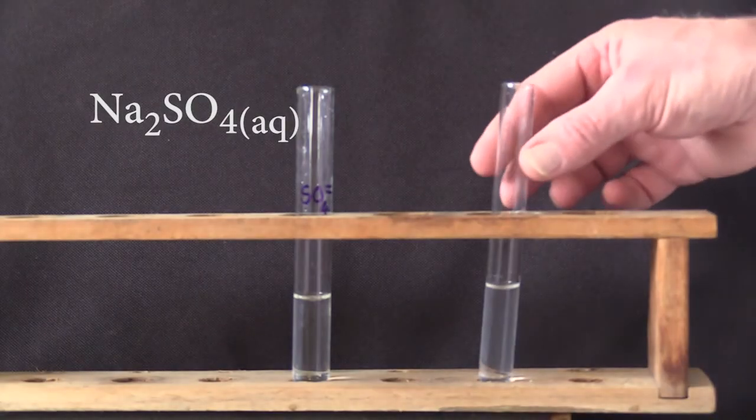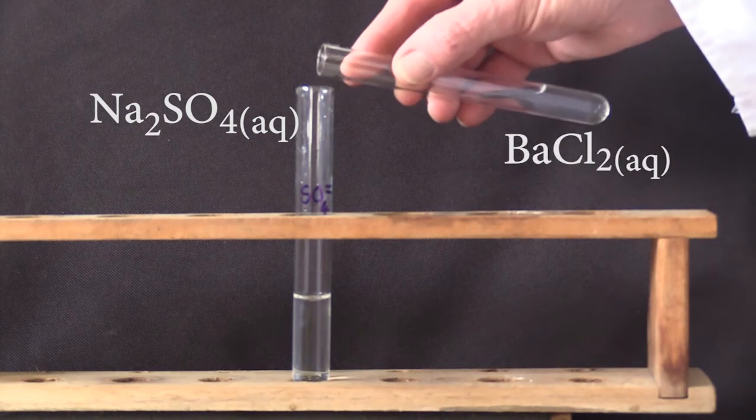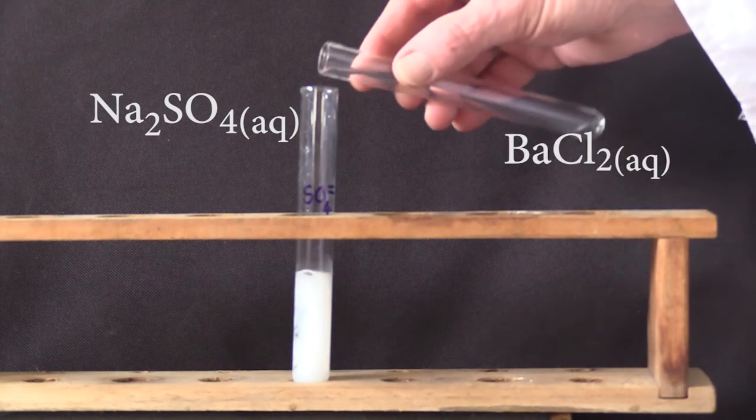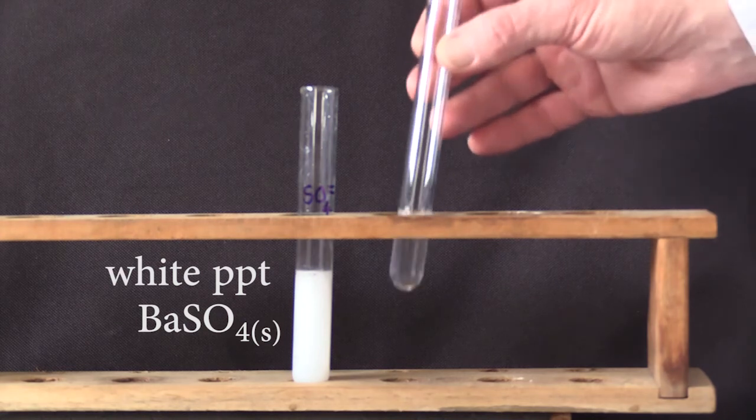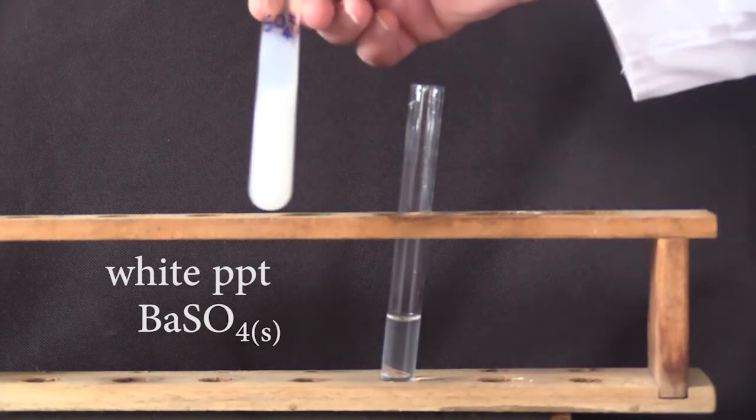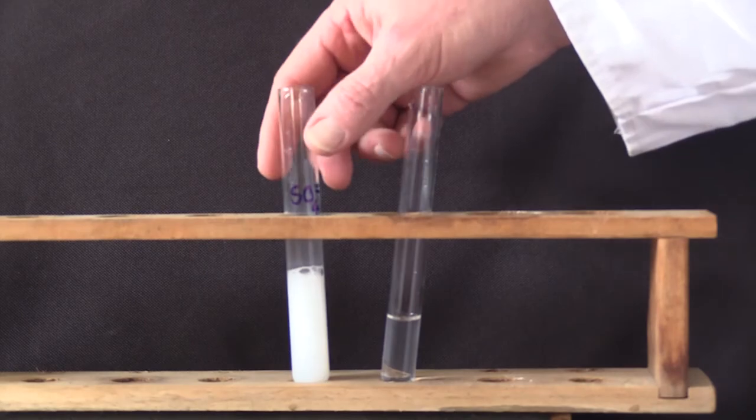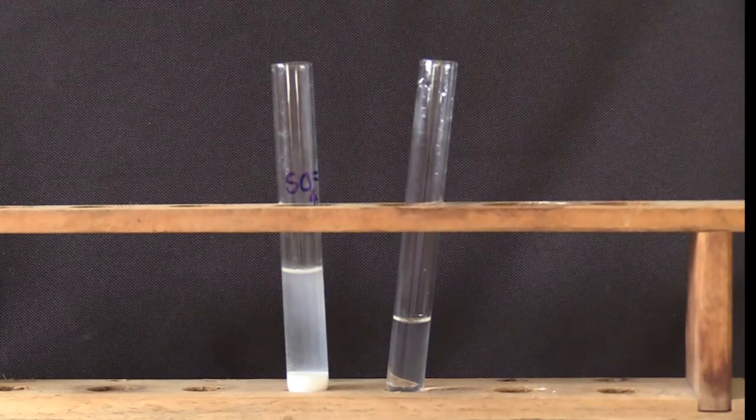Mixing soluble sodium sulfate with barium chloride gives us a white precipitate of barium sulfate. And after a little while, it settles on the bottom.